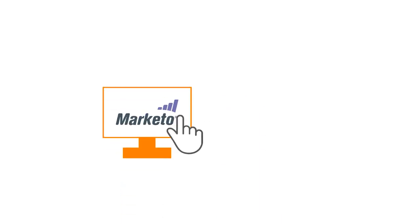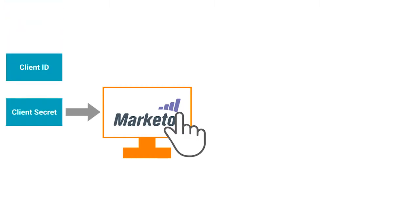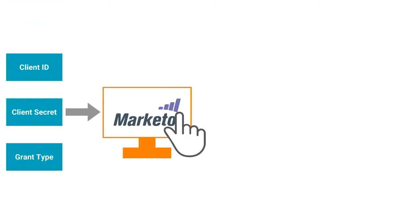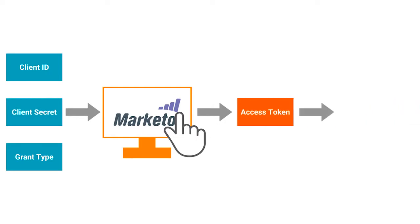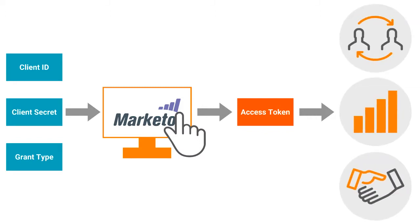To access Marketo, we need to provide inputs like client ID, client secret, and a grant type, which returns an access token as output. The access token is then used for further interactions with the Marketo system.